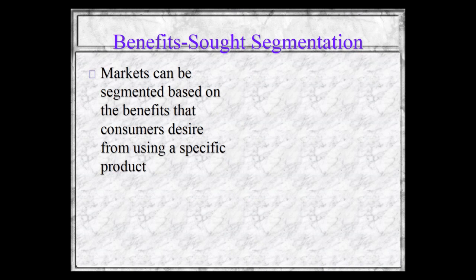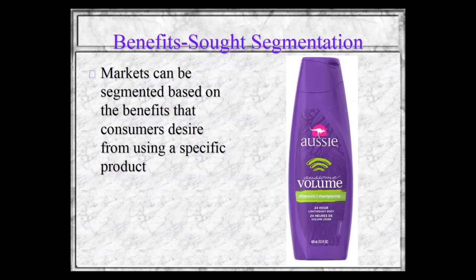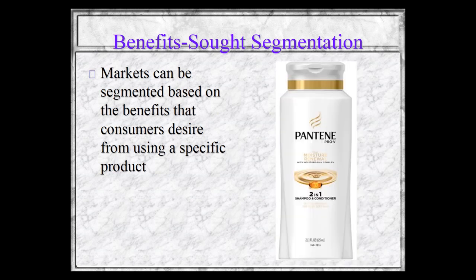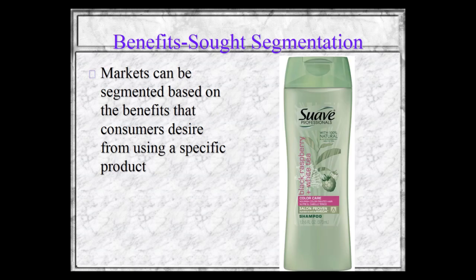Markets can be segmented based on the benefits consumers desire from a specific product. Let's talk about shampoo. You've got dirty hair and need shampoo, but many products have very specific benefits. Aussie is for volume — you want thicker hair. Art Naturals is hair loss prevention therapy. Pantene 2-in-1 is for convenience — shampoo and conditioner combined. Head and Shoulders is for dandruff flakes. And Suave is the price player — it does what the others do for less than half the cost.